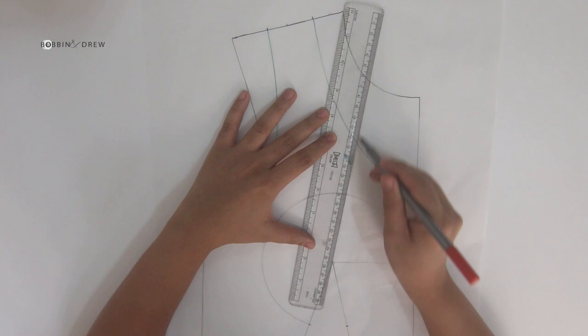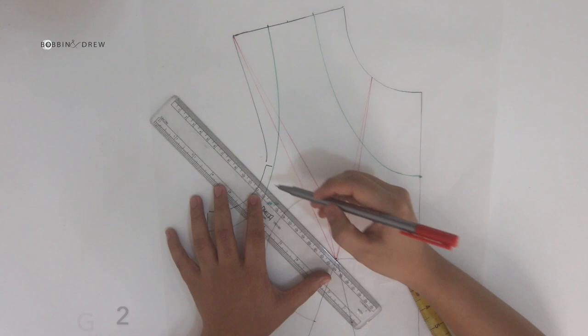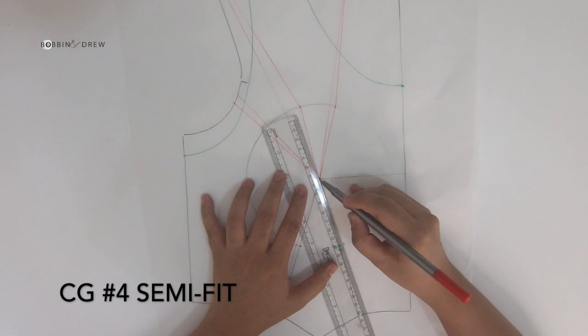Here I have marked contour guide number 1, 2, 3, contour guide number 4 for a semi-fit design with a total measurement of 3/8 of an inch, the side ease and the shoulder slope.